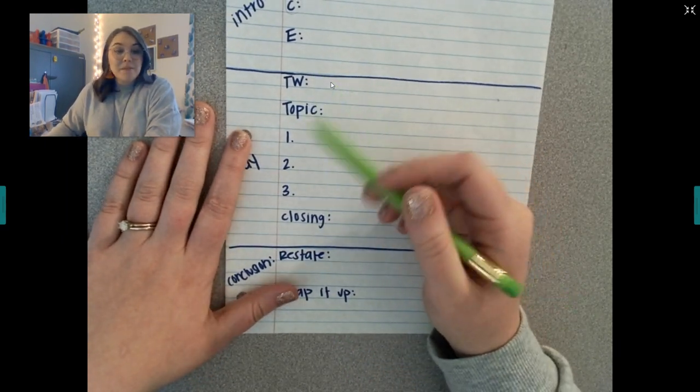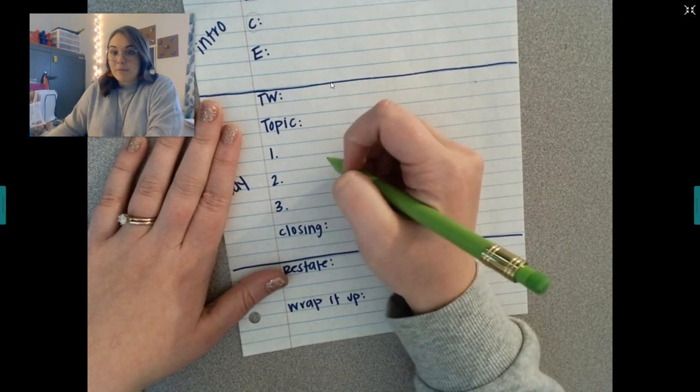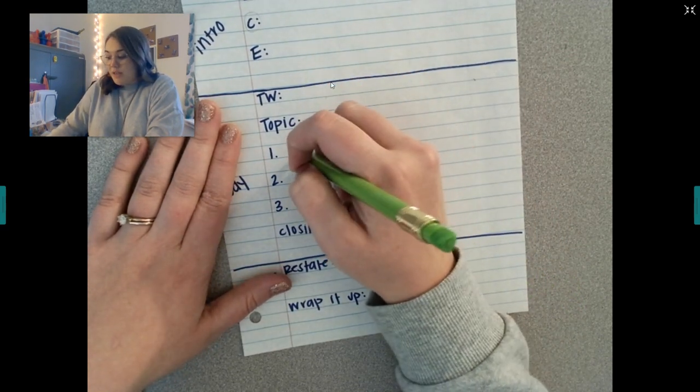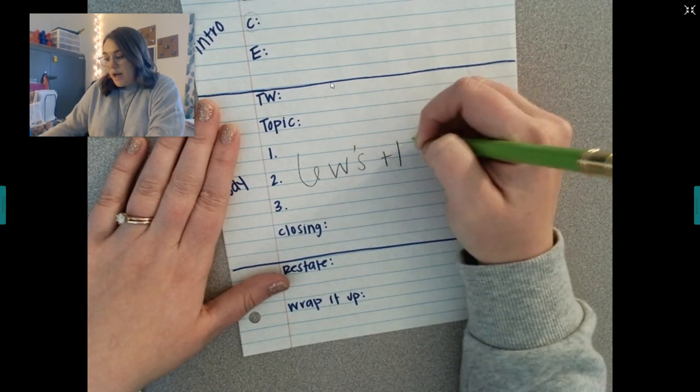Then the body is probably the hardest because this is the one you actually have to write your one, two, three. Now remember on your one, two, three, I want you to think of the six W's plus one.